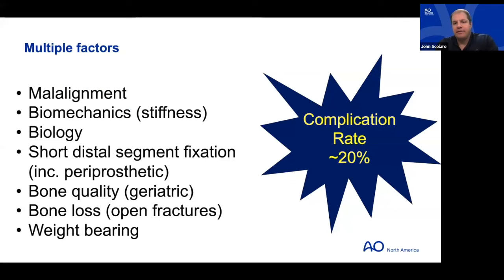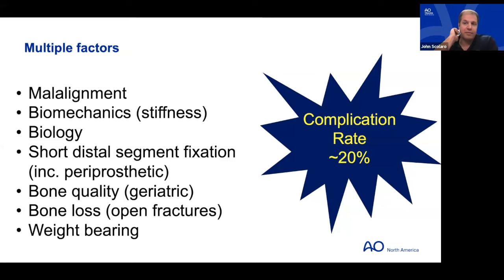Historical data has had complication rates anywhere upwards of 20 percent. Newer series have dropped that number, reflecting better understanding of avoiding varus fixation and respecting metaphyseal comminution biology. But when dealing with very short distal segments or limited fixation opportunities — especially around a total knee arthroplasty implant — there are real challenges in obtaining and maintaining appropriate fixation.